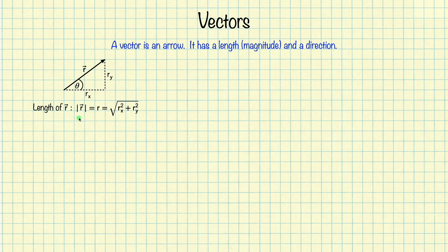This notation of placing the vector in absolute value brackets means we're referring to the vector's magnitude, or its length. Alternatively, the length of the vector may also be written by simply writing the vector without the arrow on top. So, with the arrow on top we're referring to the vector, which has a length and a direction. Without the arrow on top, we're just referring to its length. For texts that use bold lettering to refer to vectors, they will often switch to non-bold lettering when referring to the vector's length.